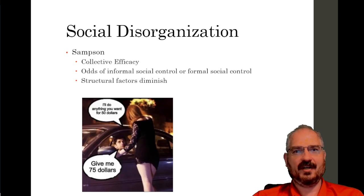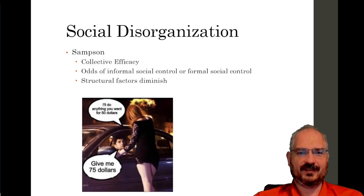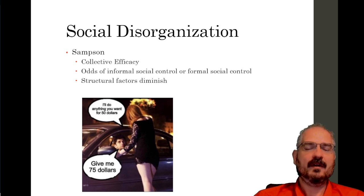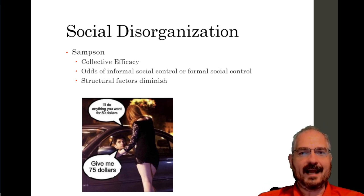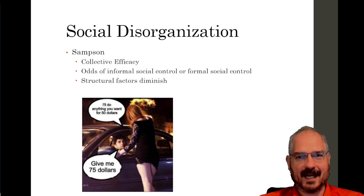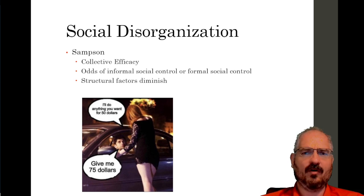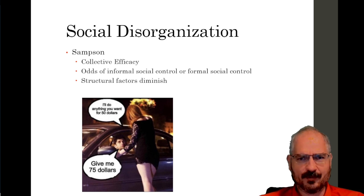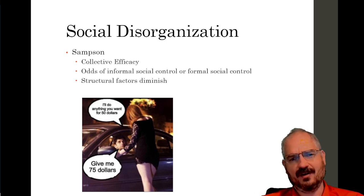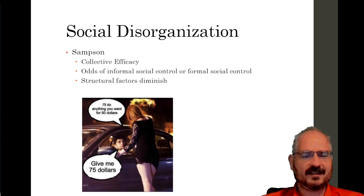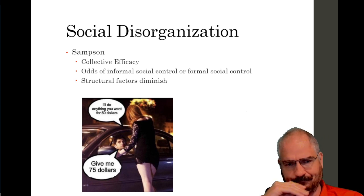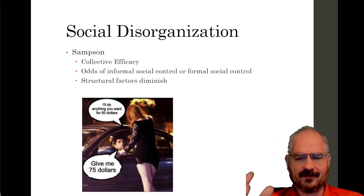We are back with our discussion of social disorganization. The early ideas and data from Shaw and McKay pointed out how crime is associated with certain neighborhoods — this zone in transition — poverty, disease, dilapidation of buildings. All those things were really important for 20th century criminal justice.